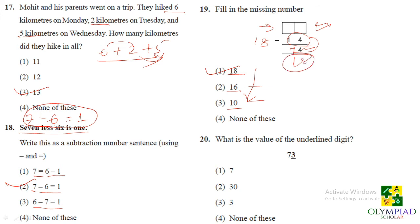Question number 20. What is the value of the underlined digit? See, the underlined digit is 3 and it is present on the units place. So its value will be 3 itself. So it is present in option number 3 that is 3.